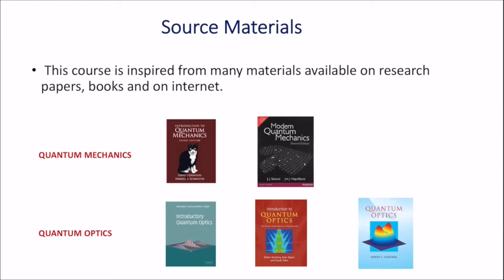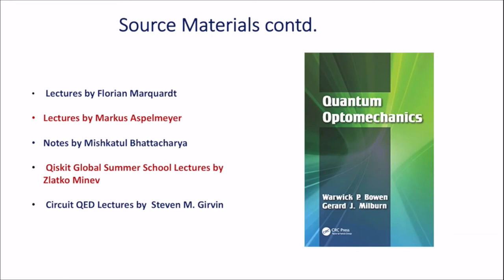For quantum mechanics, you may look at the elementary book by David Griffiths — the fourth edition has come out. A more advanced book is Sakurai's Modern Quantum Mechanics. For quantum optics, you may look at Introductory Quantum Optics by Gerry and Knight, and another nice book, Introduction to Quantum Optics by Grynberg, Aspect, and Fabre — written by three authors: Gilbert Grynberg, Alain Aspect, and Claude Fabre. A more advanced book is Quantum Optics by Girish S. Agarwal, which is used to discuss some materials in Module 3 on cavity quantum optomechanics.